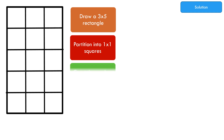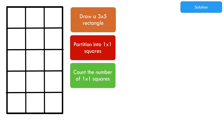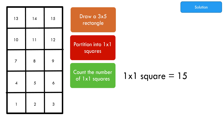Count the number of 1 by 1 squares. We have a total of 15 one-by-one squares.